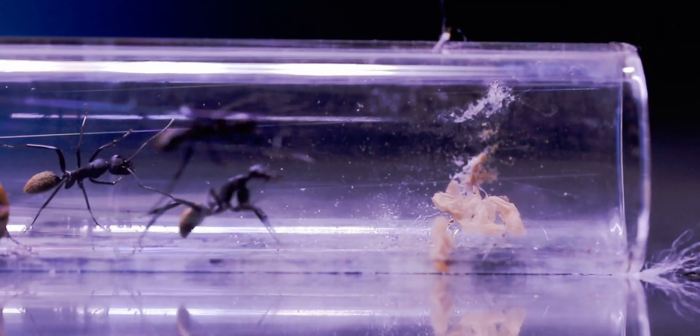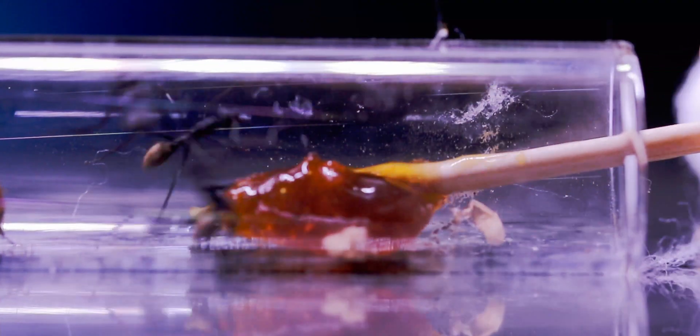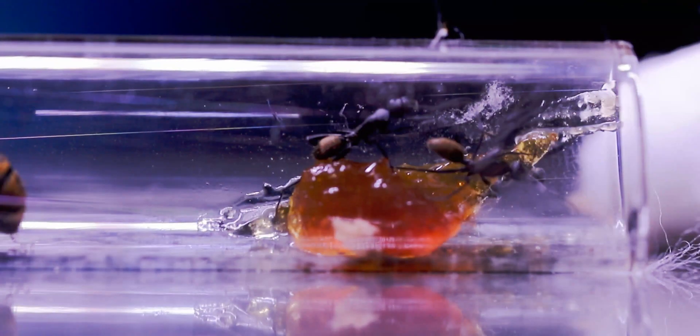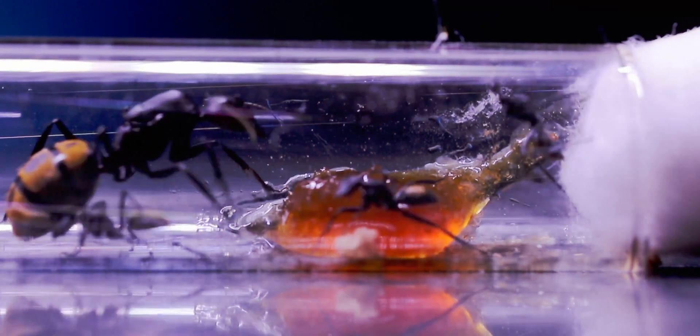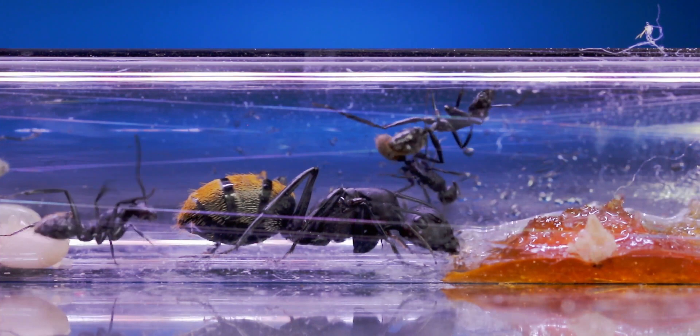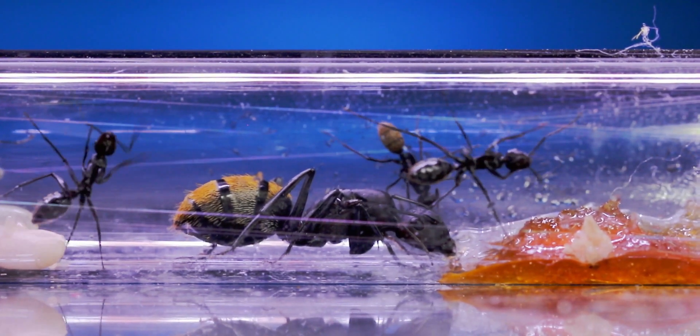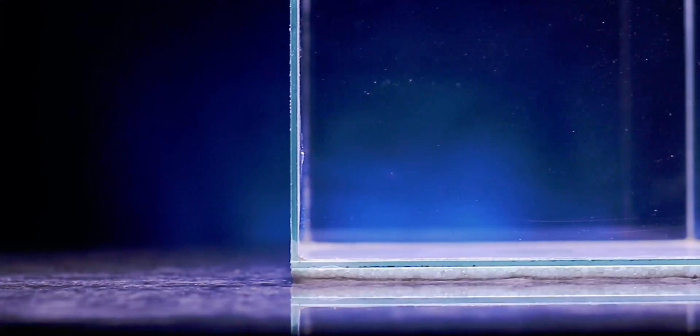Feeding this colony however is starting to become a challenge within the test tube because as you can see their boisterous nature is making it very difficult. Thus the time has come to move these ants into a small outworld setup to avoid the difficult test tube feedings.